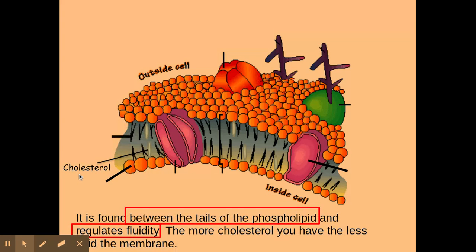We've also got cholesterol here, and cholesterol sits between the tails of the phospholipids, between these fatty acid tails. It regulates the fluidity of the membrane. The more cholesterol you have, the less fluid the membrane is going to be. It's really important here you do not mention rigidity—if you mention it being rigid or anything to do with rigidity you do not get the marks. It's about fluidity.